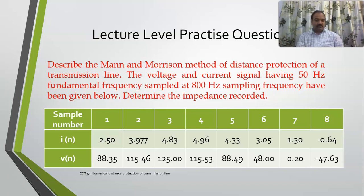Welcome back. We will do a problem on Mann and Morrison method. The voltage and current signal having 50 Hz fundamental frequency sampled at 800 Hz sampling frequency have been given below, and we need to determine the impedance recorded.